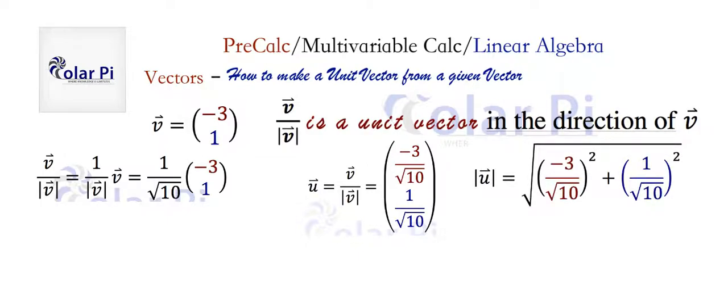But yeah, if we try to find the length of this vector U, then we'd have to square this guy, the horizontal component, and then square the vertical component, and then add them together and take the square root. That's how basically you find the length of a vector in 2D. You square both of its components, add them, and then take the square root.